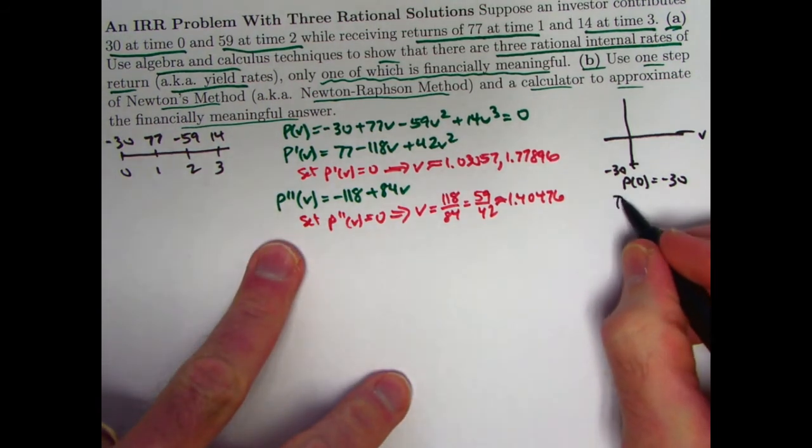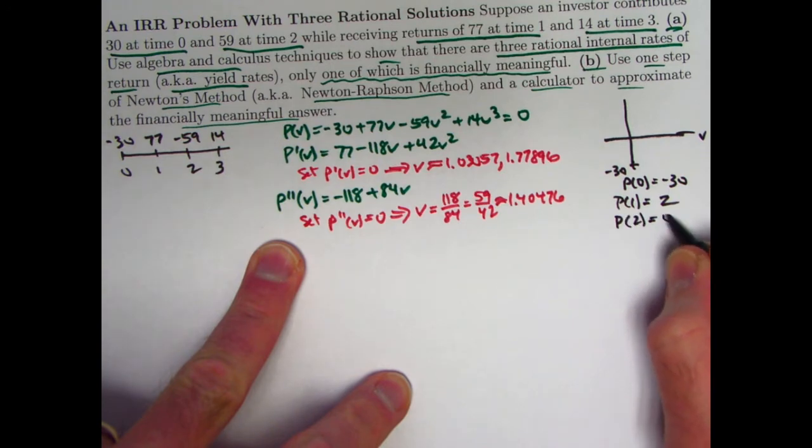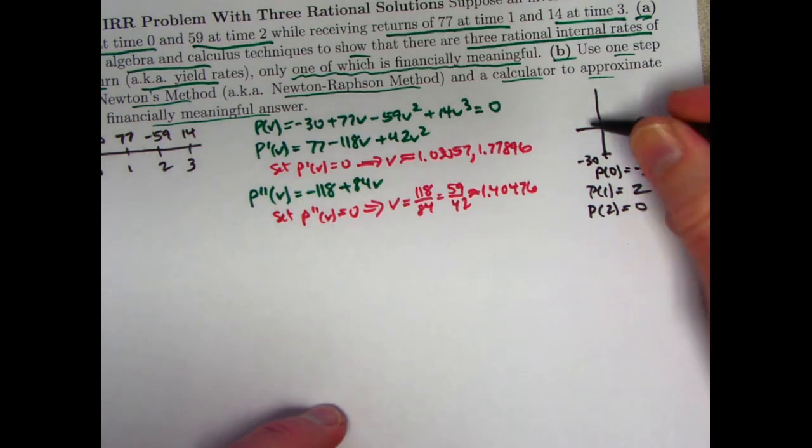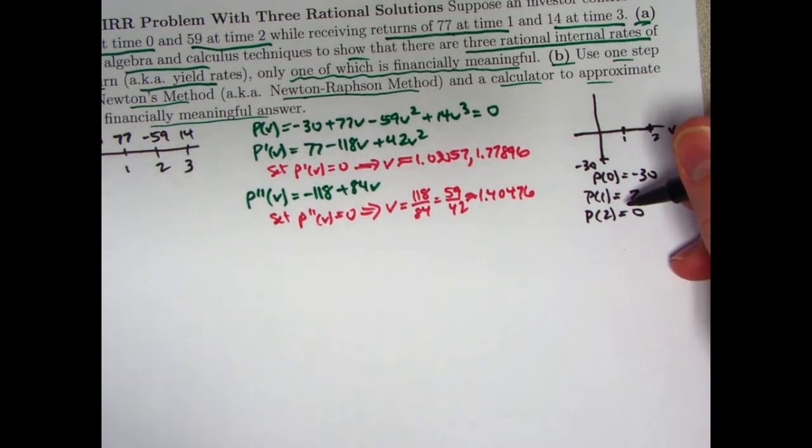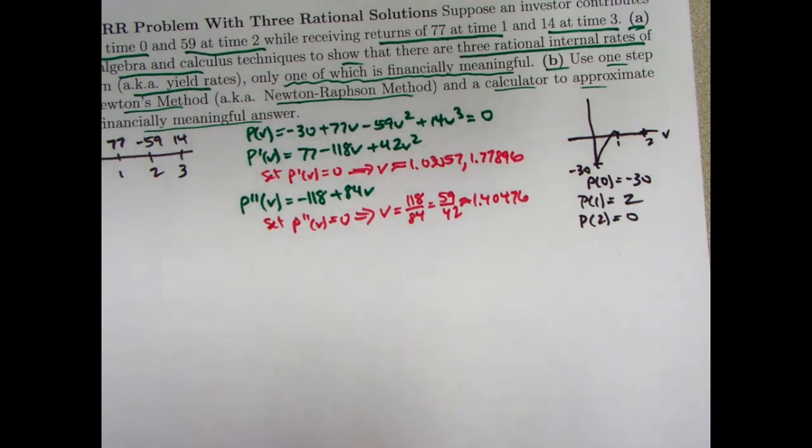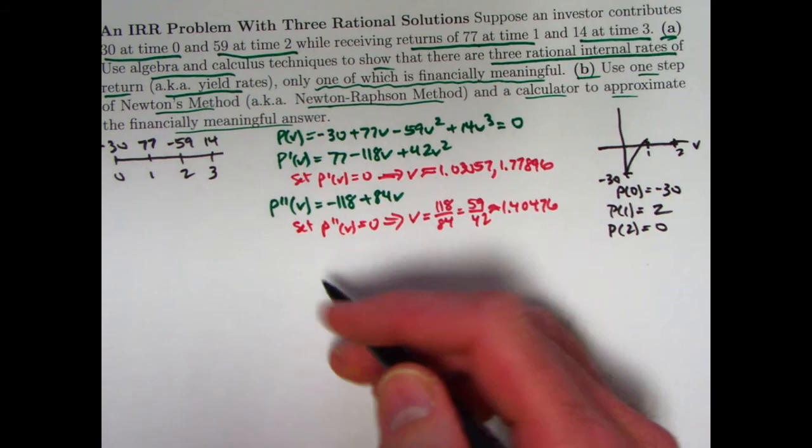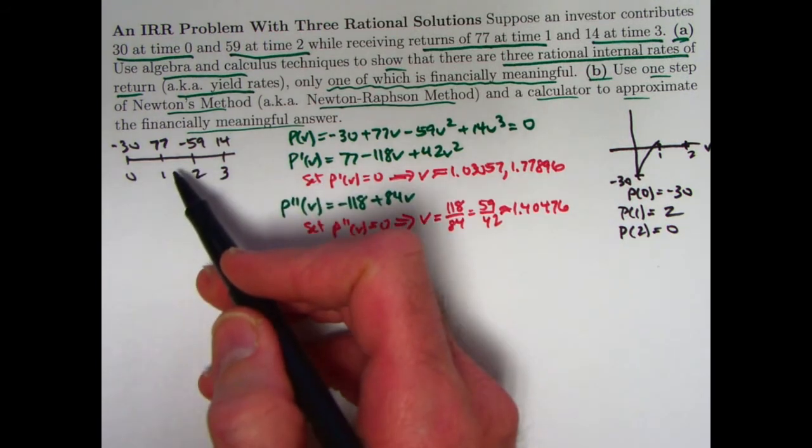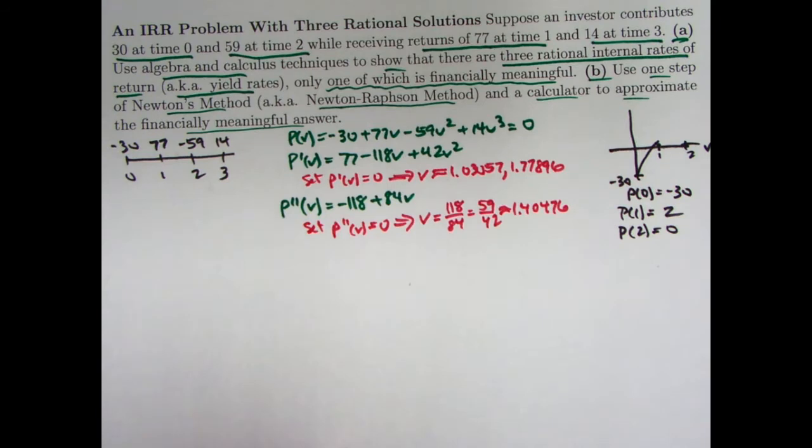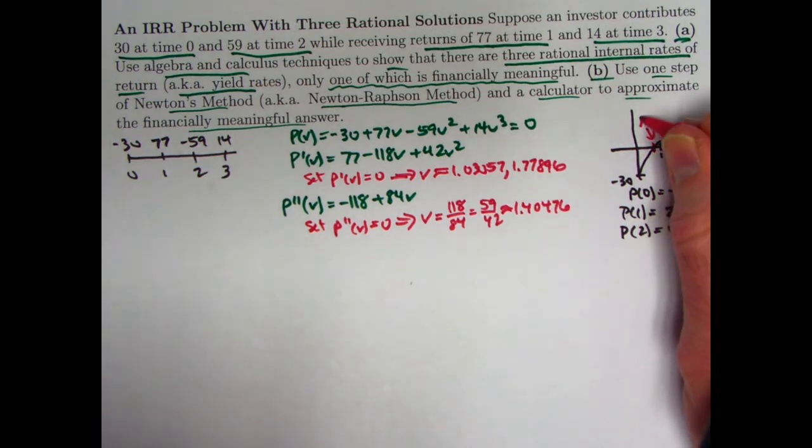p double prime of v would be negative 118 plus 84v. If we set that equal to zero and solve for v, the solution will be the first coordinate of the inflection point. It'll be at 118 over 84, 59 over 42, approximately 1.40476. So there's some practice with calculus. If we plug in a couple other points here, p(1) for example, you should check that you get 2. And plug in 2, it turns out that's one of the roots for v. You should get zero. So we can start making the graph here.